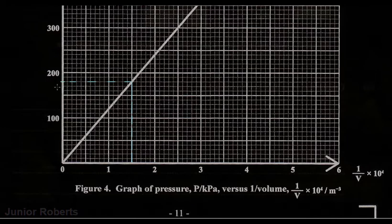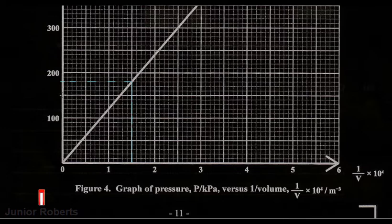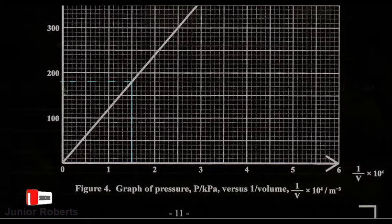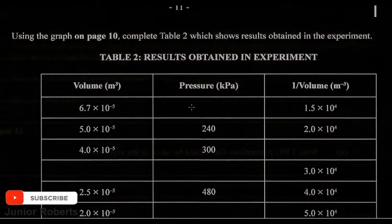We touch the line and then go across to the y-axis using a straight broken line, and this is where our corresponding pressure value will be. Now if we look at our scale, we have 2 centimeters to 100 kilopascals. We have 100 right here, which would be 150, and each of these lines is actually 10 kilopascals. So we have 150, 160, 170, and 180 kilopascals. So we're going to write in our table 180 kilopascals.